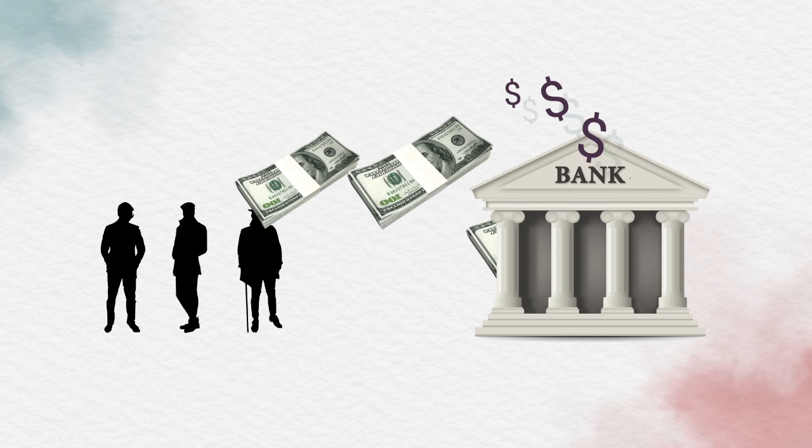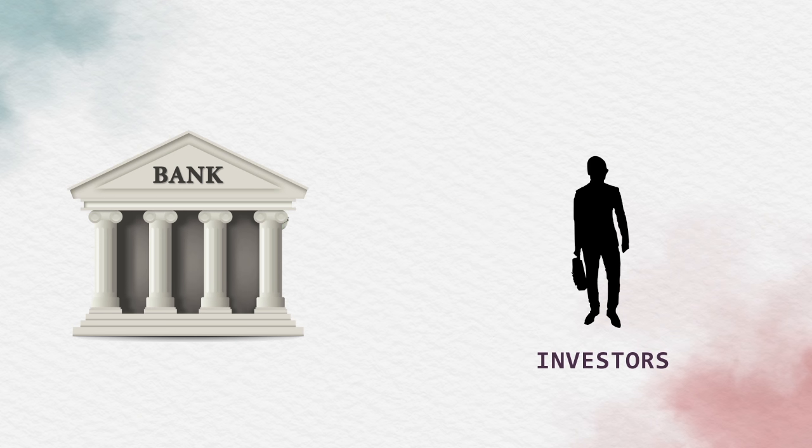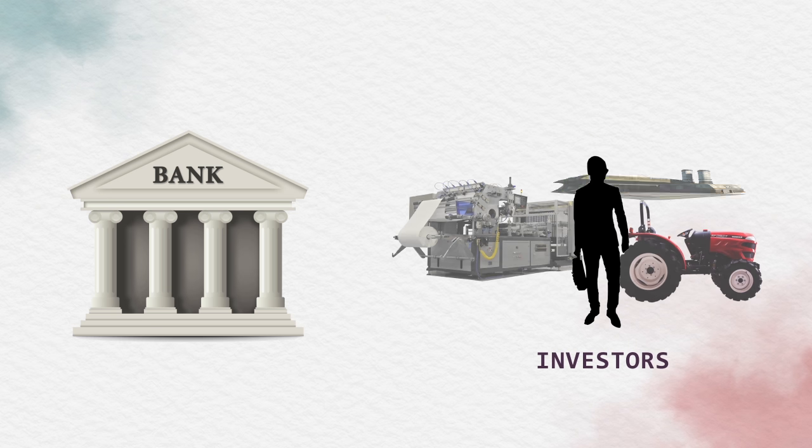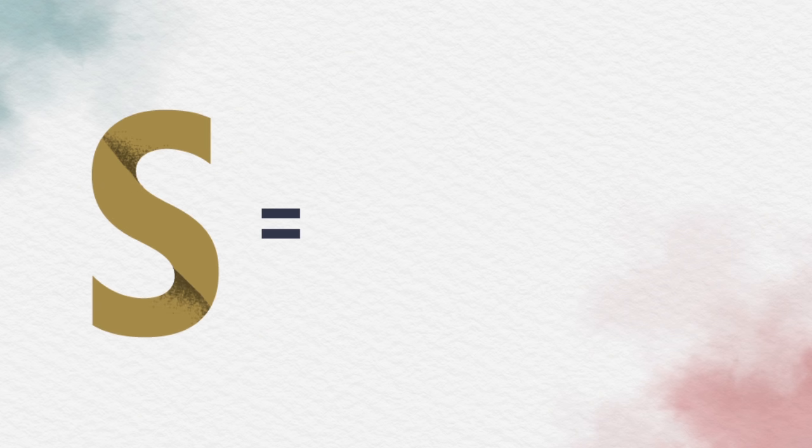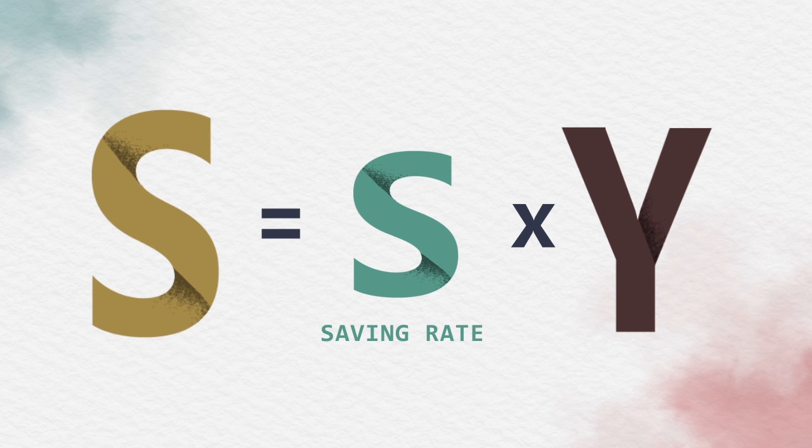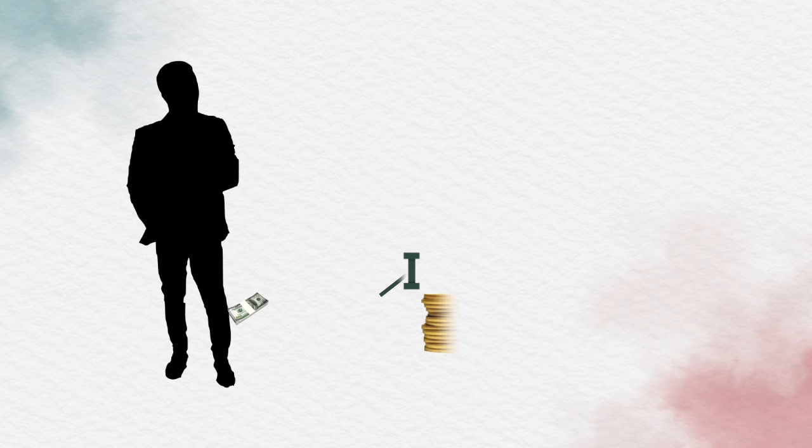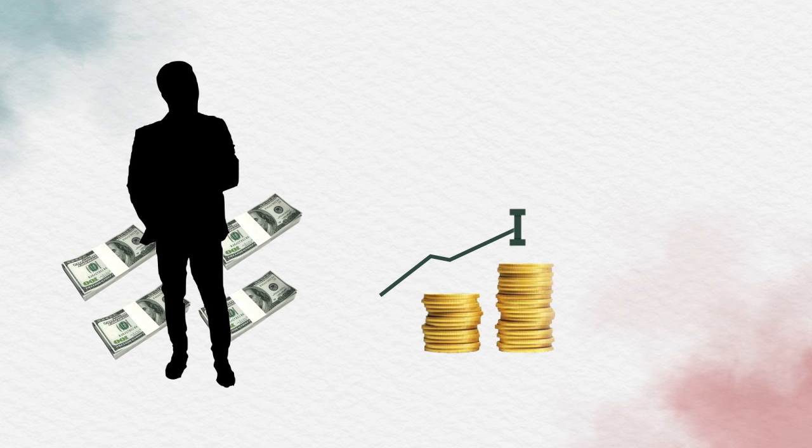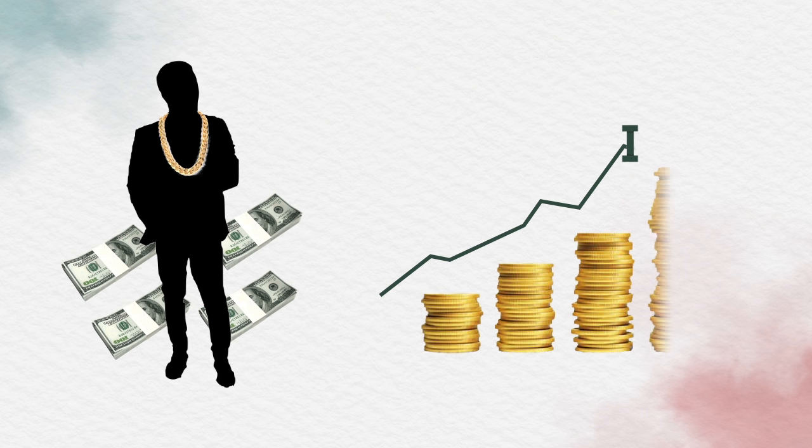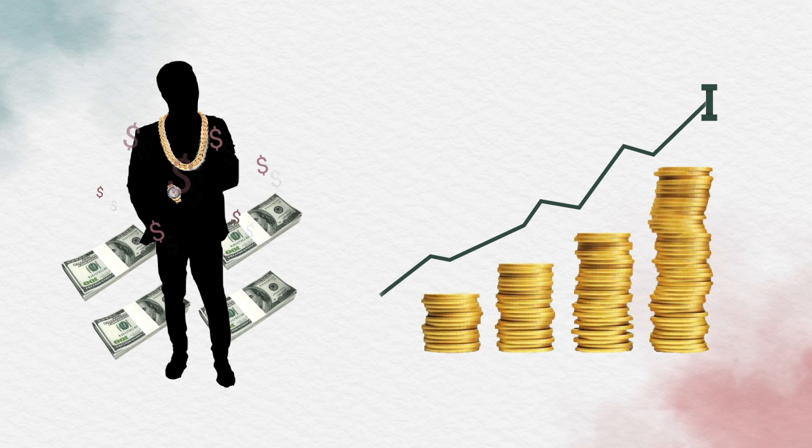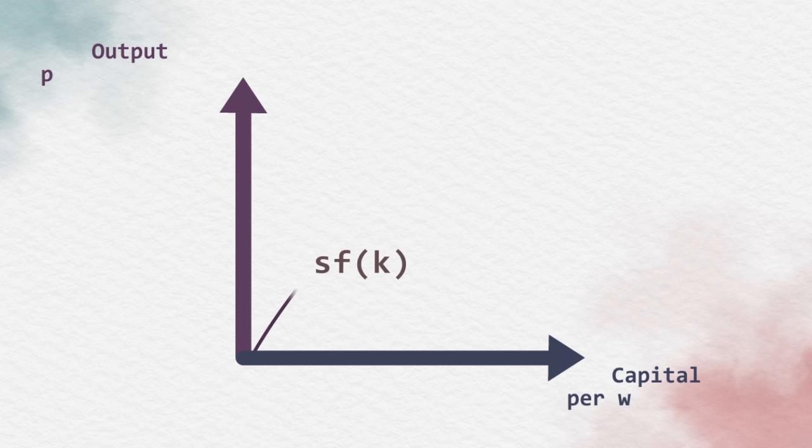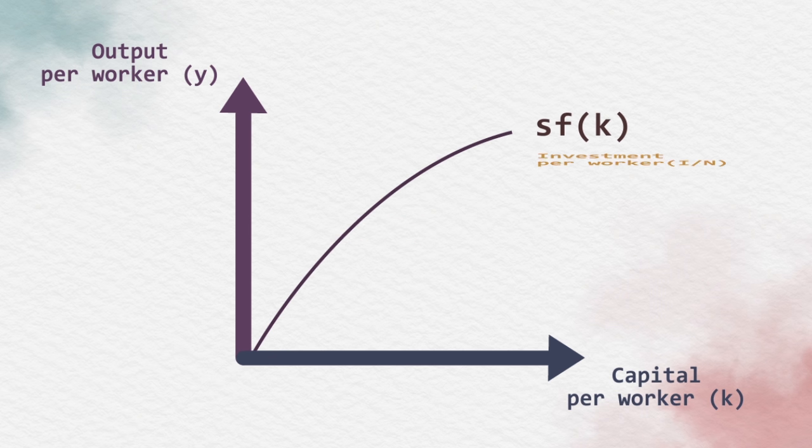Savings become investment when banks lend out money to investors for business investment. Additionally, the savings come from the saving rate (lowercase s) multiplied by the income or the output. If people have more income, they will save more, so it will lead to an increase in investment. Now we can put the investment on our graph in the form of per worker.